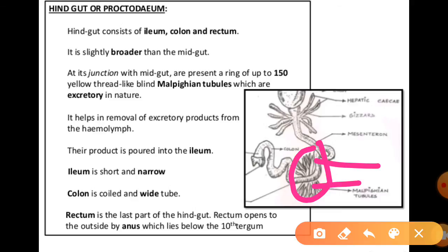The ileum is short and narrow, and the colon is a white coiled tube without spines. The rectum is the last part of the hindgut. The papillae present in the rectum absorb water and salt from the undigested food, and the rectum opens outside by the anus, which lies below the 10th tergum.